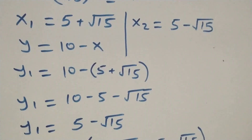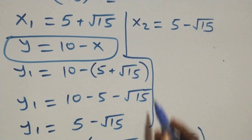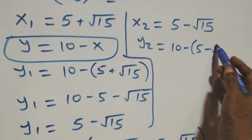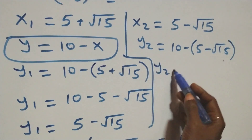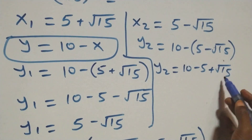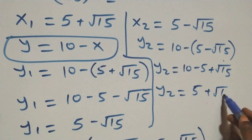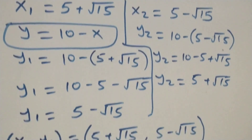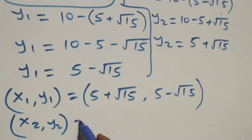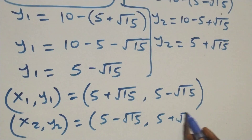We also find y two using the same relation. y two equals to ten minus x two, which is ten minus (five minus root fifteen). This gives y two equals to ten minus five plus root fifteen, so y two equals to five plus root fifteen. The second solution is (x two, y two) equals to (five minus root fifteen, five plus root fifteen).